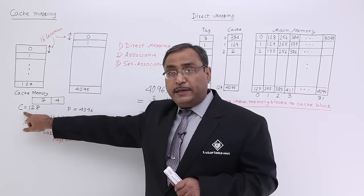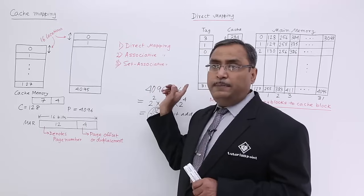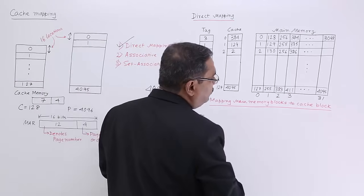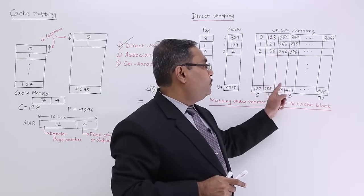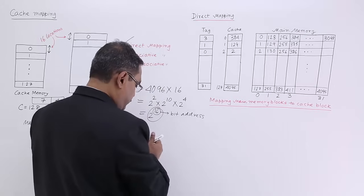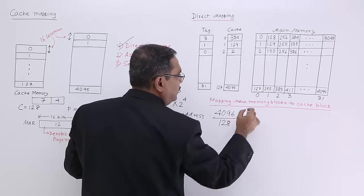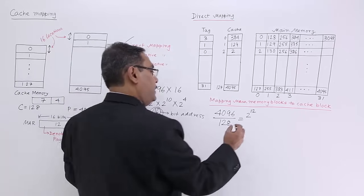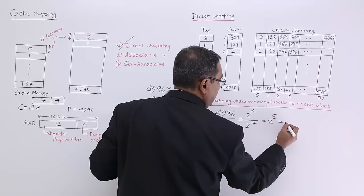In direct mapping, the cache has C equal to 128 frames and main memory has P equal to 4096 pages. I divide the main memory into blocks of 128 pages each, giving 4096 divided by 128 blocks. Since 4096 is 2 to the power of 12 and 128 is 2 to the power of 7, we get 2 to the power of 5, which is 32 blocks numbered 0 to 31.